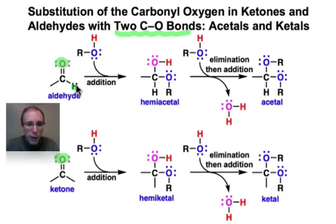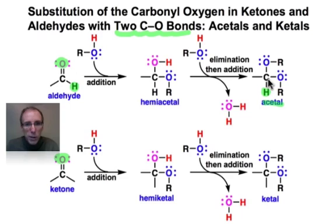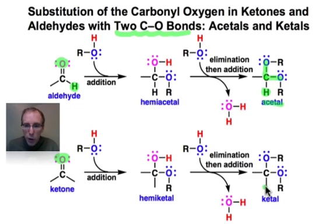If we're talking about aldehydes, where one of the substituents attached to the carbonyl carbon is H, then we end up generating what's known as an acetal functional group. The carbon that was the carbonyl carbon has transformed into an sp3 carbon with two carbon-oxygen single bonds. In the case of ketones, it's analogous except we have no hydrogen attached to that carbon — we still see the two carbon-oxygen single bonds. This functional group is known as the ketal.